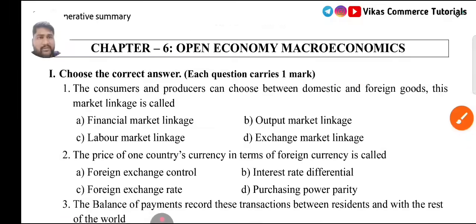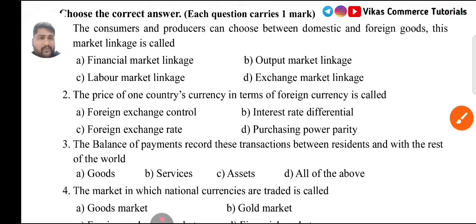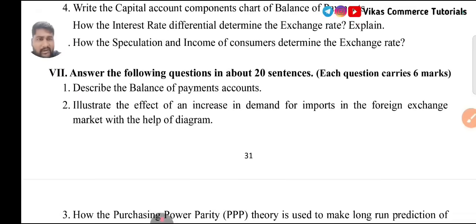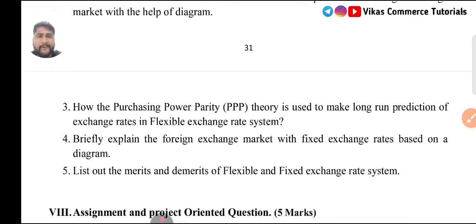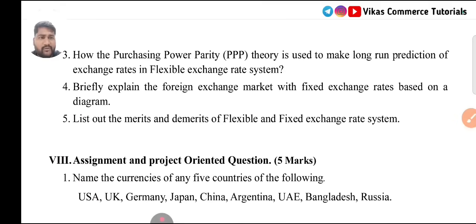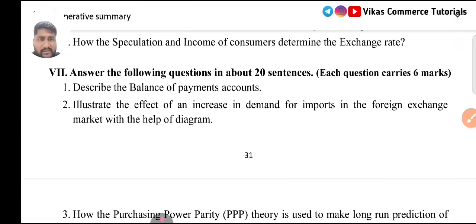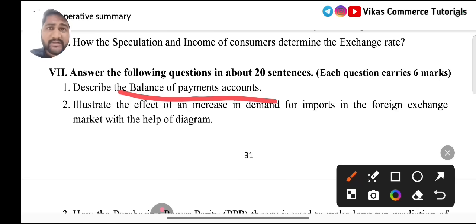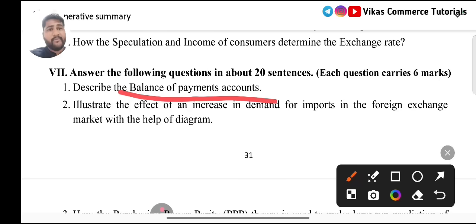Coming to the last chapter: Open Economy Macroeconomics. I don't sense any important 6 marks question here — there are only five questions and none have been asked before. But if you still want to study, you can go for BOP (Balance of Payments) from the 4 marks category. From 6 marks I don't think any are particularly important, but you can go for Question 1.